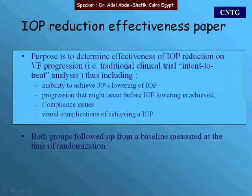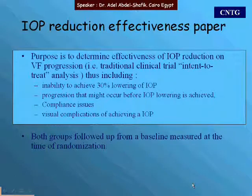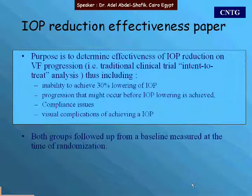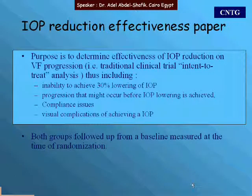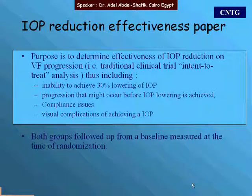The second paper, published in the same journal and year, aimed to determine the effectiveness of IOP reduction on visual field progression using a traditional clinical trial intent-to-treat analysis. This included cases with inability to achieve 30 percent IOP lowering, progression that occurred before IOP lowering was achieved, compliance issues, and visual complications of achieving target IOP.